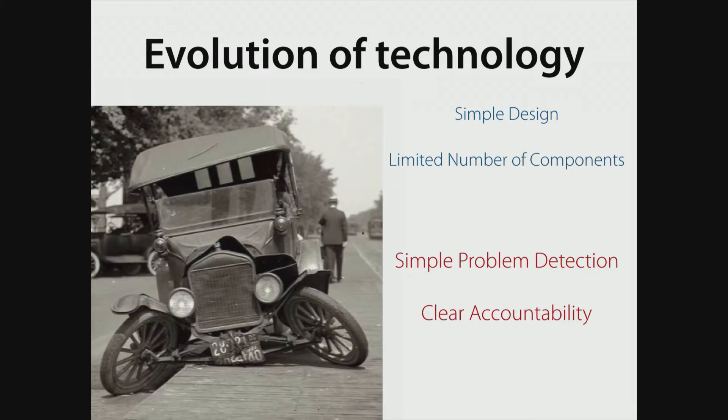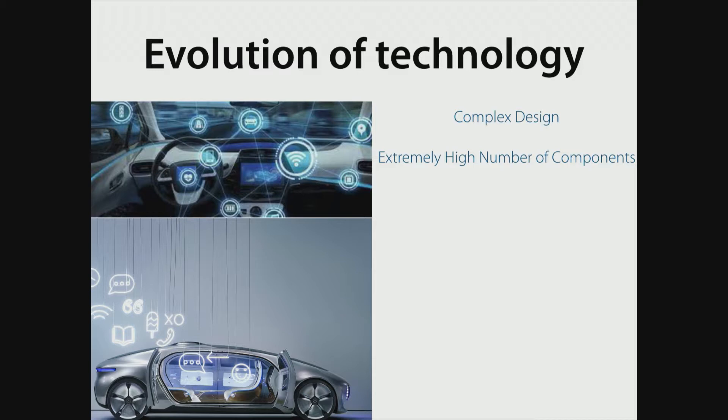What is striking is that this car had a very simple design with a limited number of components. And what this resulted in is if there was an accident, there was a very simple way to detect the problem. Because the number of components was so small. And there was also a very clear accountability on whom had introduced the problem. Because the number of people actually working on each car was quite small. Now, if you look at this more recent prototype of the Mercedes self-driving car, it is a nightmare. On the one hand, it is a very complex design. The patent goes over many pages. It has an extremely high number of components that are all interconnected. It's not so much that the hardware is complex, but there's a lot of software involved.